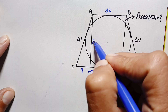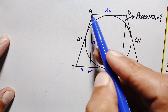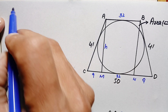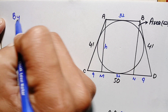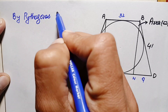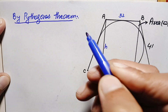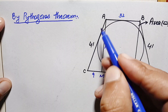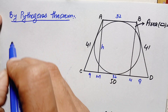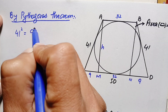Let AM = h, which is the height of the trapezoid. To find h, we apply the Pythagorean theorem in right-angle triangle ACM. By the Pythagorean theorem: hypotenuse² = base² + perpendicular². The hypotenuse is AC = 41, the base is CM = 9, and the perpendicular is h. So: 41² = 9² + h².